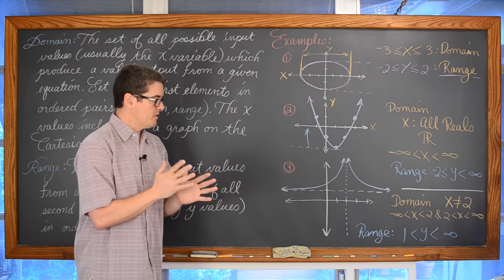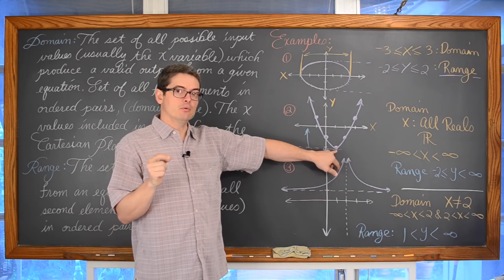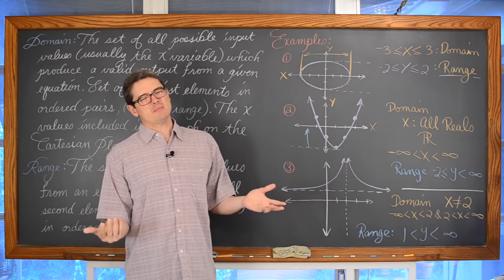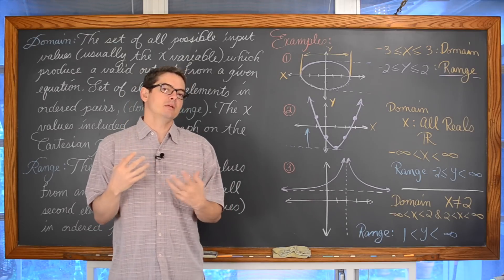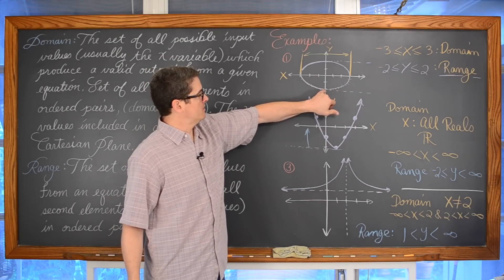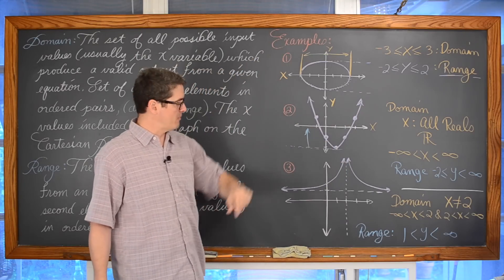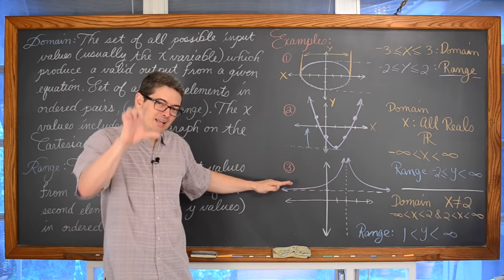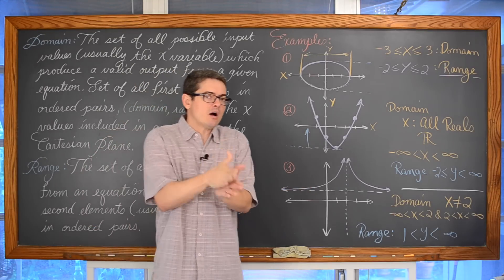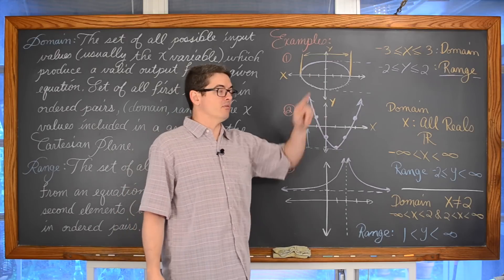In an upcoming algebra lesson we are going to talk about identifying minimums and maximums. The ellipse has a minimum y value of negative two and a maximum of positive two. The parabola has a minimum of negative two but no maximum, since it goes up forever. The third graph is approaching one from above but never actually reaches a concrete number, so it also has no minimum and, because it goes up forever, no maximum either.